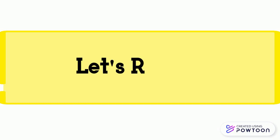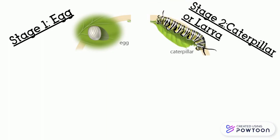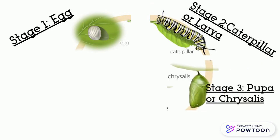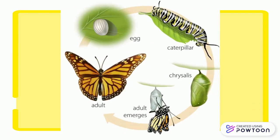Now it's time to review. We first begin with stage one, the egg. Then we have stage two, caterpillar or larva. Next comes stage three, pupa or chrysalis. Then comes stage four, when the adult butterfly emerges and we have a beautiful butterfly. These are the steps to what it takes for a butterfly to form. We now know the true life cycle of a butterfly.